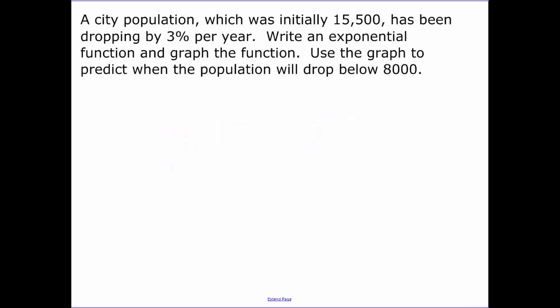Our first example. A city population, which was initially 15,500, has been dropping. That's key, dropping. So I'm decreasing by a rate of 3% per year. Write an exponential function and graph the function. Use the graph to predict when the population will drop below 8,000. So our formula: A(t) is equal to a, which is our initial amount, 1 minus our rate to the t power. Let's start plugging stuff in.